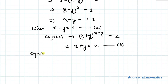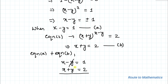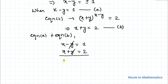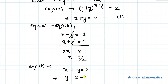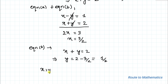Adding equations A and B: x minus y equals 1 and x plus y equals 2. The y terms cancel, giving 2x equals 3, so x equals 3 by 2. Substituting x back into equation A: y equals 2 minus 3 by 2, which equals 1 by 2. So from Case 1 we get x equals 3/2 and y equals 1/2.